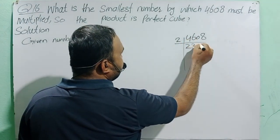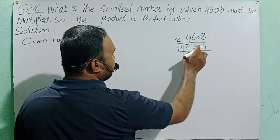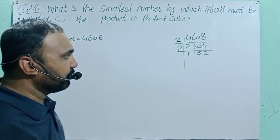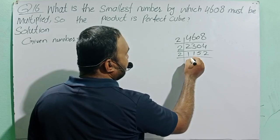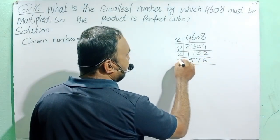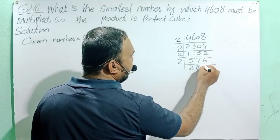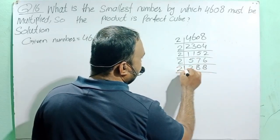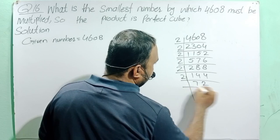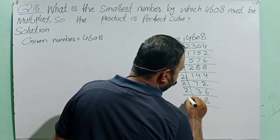Continuing the prime factorization by repeatedly dividing by 2: 4608 ÷ 2 = 2304, ÷ 2 = 1152, ÷ 2 = 576, ÷ 2 = 288, ÷ 2 = 144, ÷ 2 = 72, ÷ 2 = 36, ÷ 2 = 18, ÷ 2 = 9.